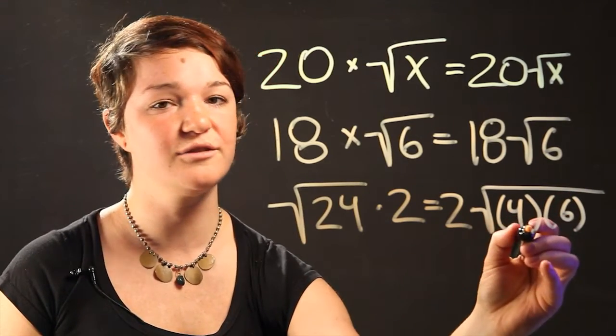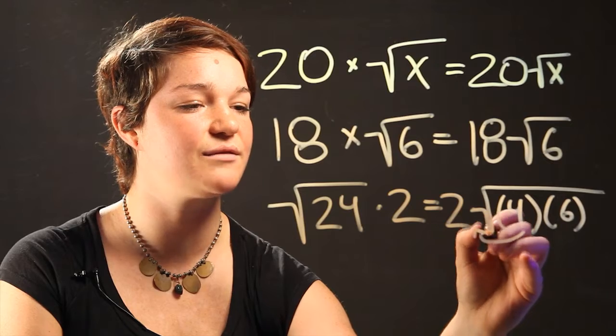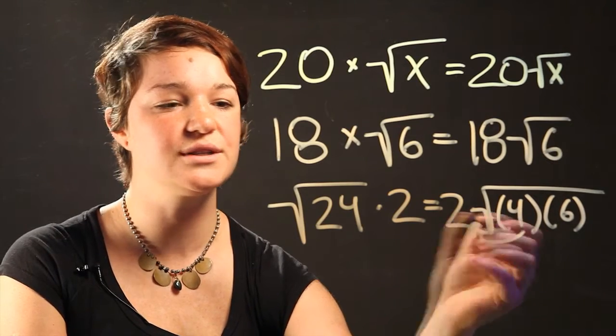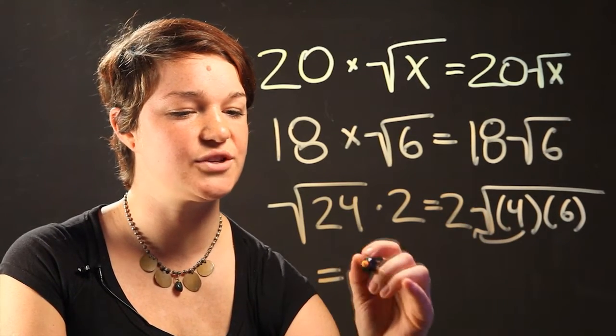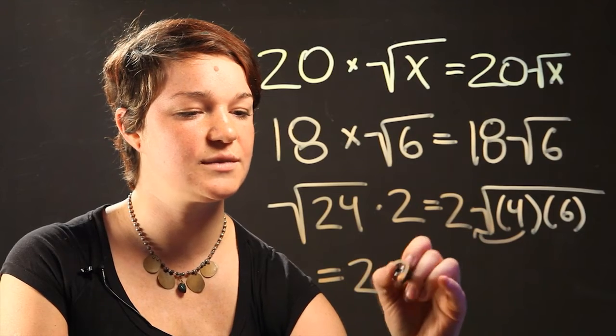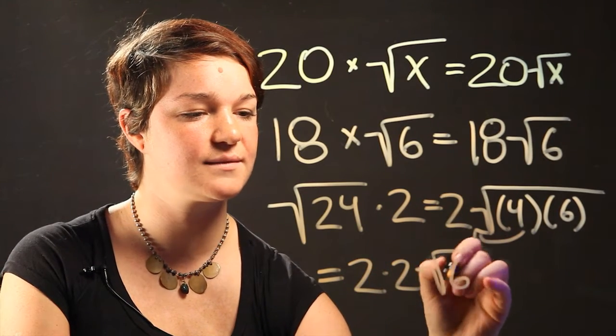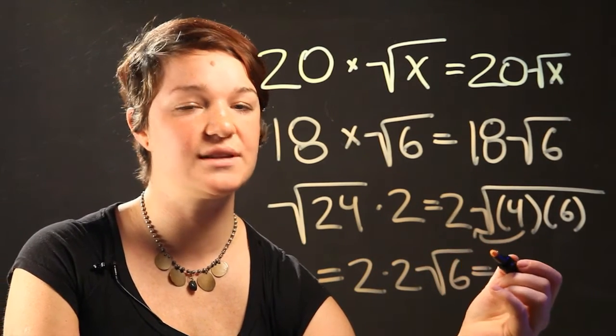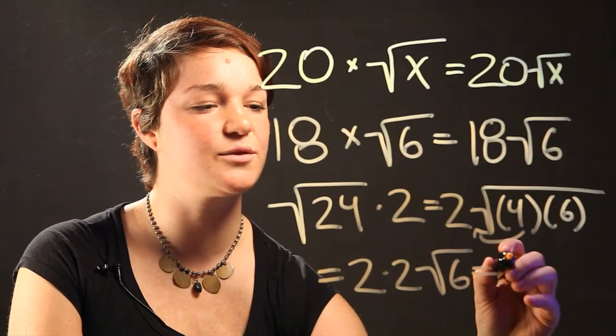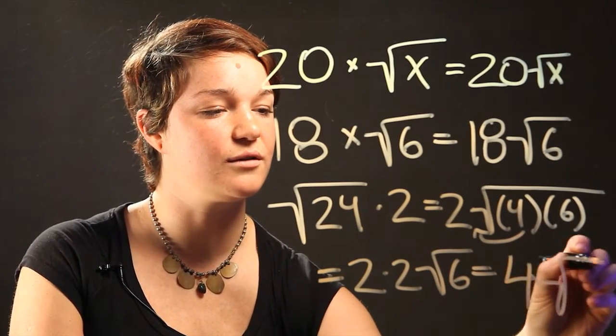Now the radical of 4 can be eliminated. It can be taken outside of the radical, and it's actually equal to 2. So this expression is equal to 2 times 2 radical 6, or pretty much the simplest final answer is going to be 4 radical 6.